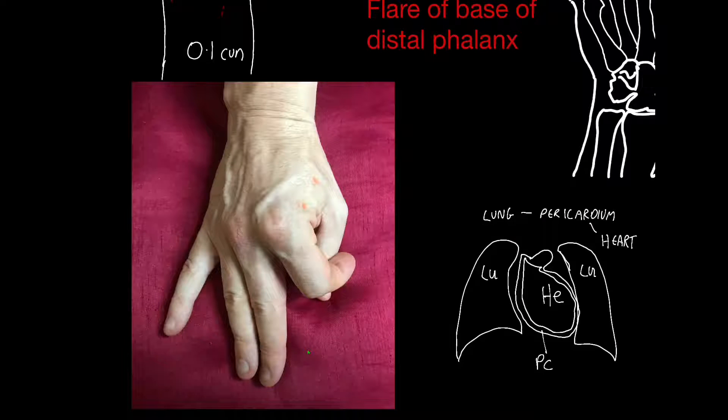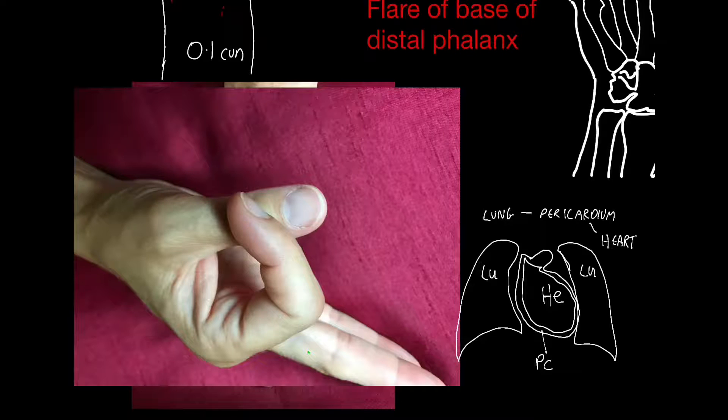You can remember them by making this slightly odd shape and remembering that they're on the radial side of these shapes, going from superficial to deep organs: lung, pericardium, heart, and opposite them is their paired organ.